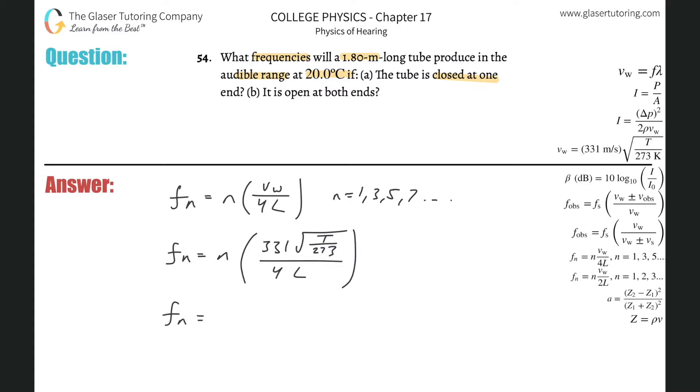So f sub n will equal n multiplied now by 331 times the square root of the Kelvin temperature. So 20 plus the 273, all divided by the 273, that whole thing divided by 4 times the length of that tube of 1.8 meters. So the frequency of the nth harmonic will be equal to n times 331 times the square root of 293 divided by 273, and then that whole thing divided by 4 times 1.8.